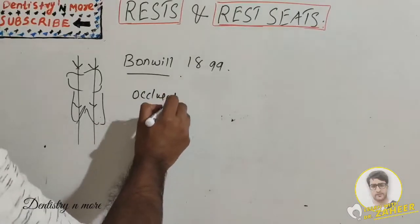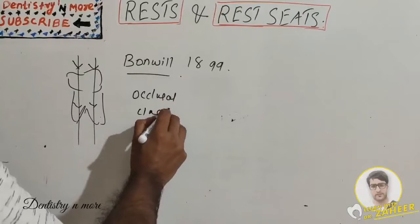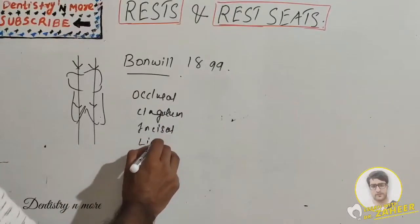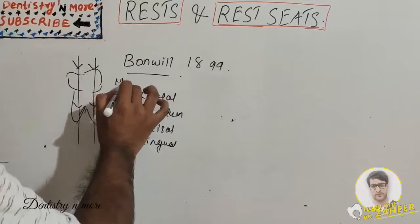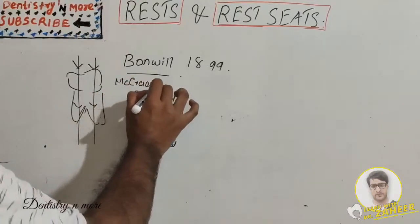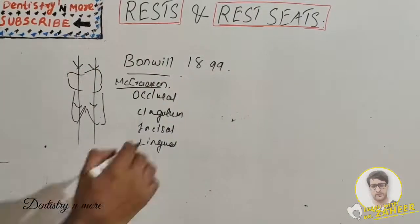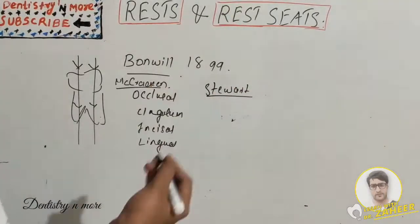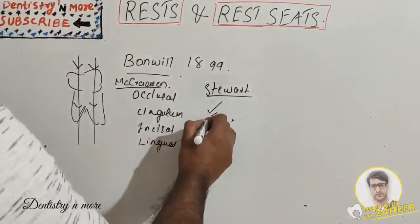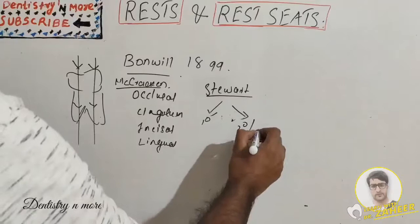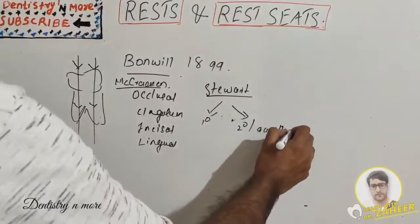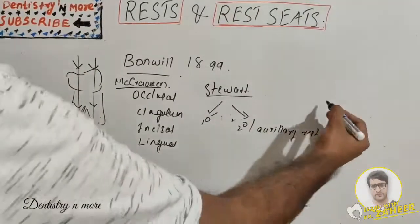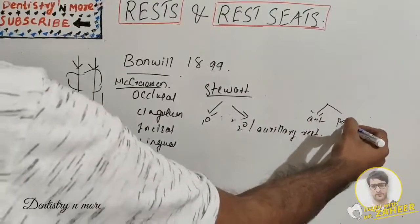Classification according to McCracken is based on the tooth surface prepared to receive the rest: occlusal rest, cingulum rest, incisal rest, and lingual rest. According to Stuart, classification is based on the function served — primary or secondary (also known as auxiliary rest). Another classification divides rests into anterior and posterior.